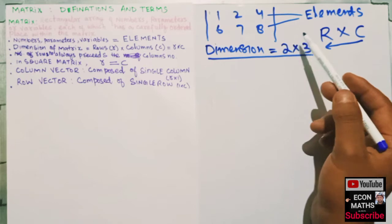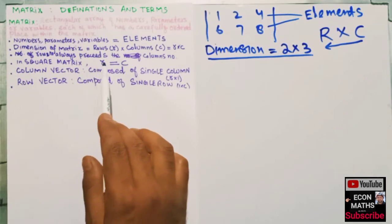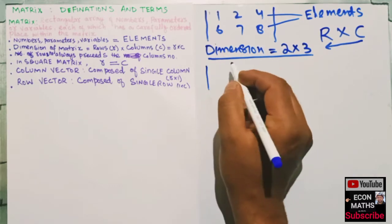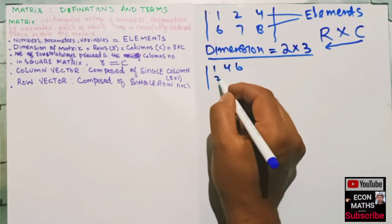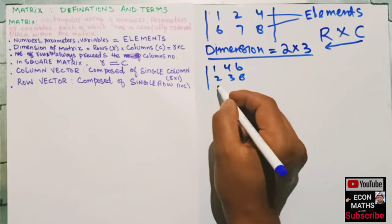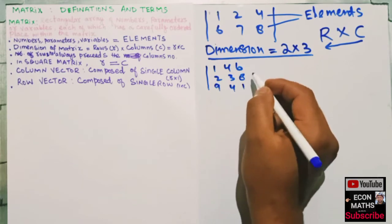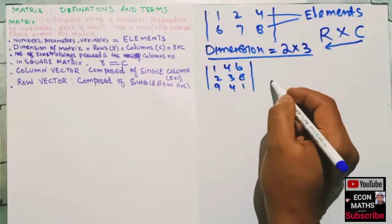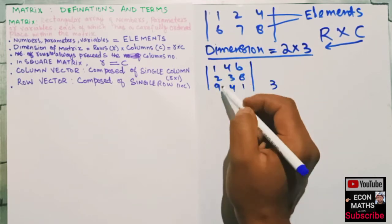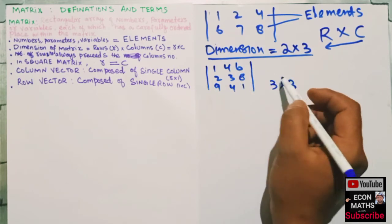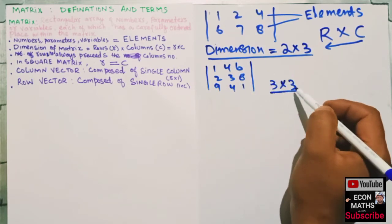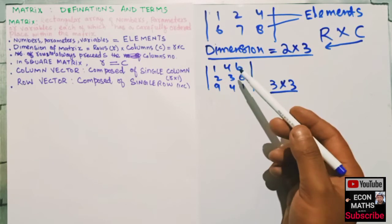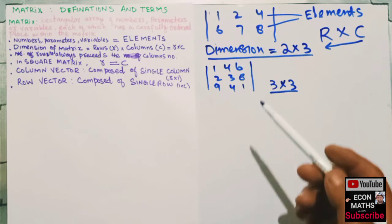In a square matrix, the number of rows is equal to the number of columns. For example, if I have the matrix with elements one, four, six, two, three, eight, nine, four, one — the number of rows is three and the number of columns is three, so the dimension is three by three.